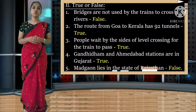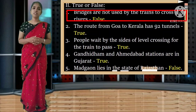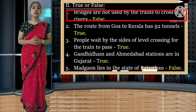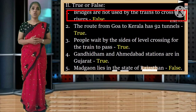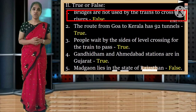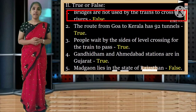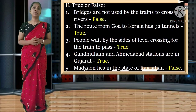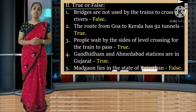Next section is true or false. First: bridges are not used by trains to cross rivers - it is a false statement. Bridges are used to cross rivers, so the statement is false. Spelling: F-A-L-S-E.